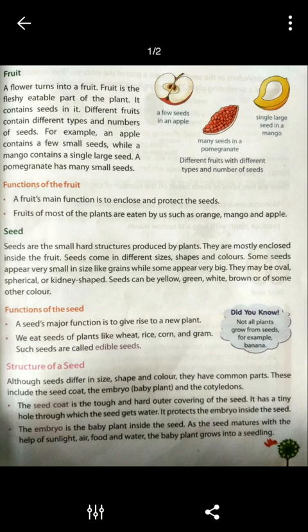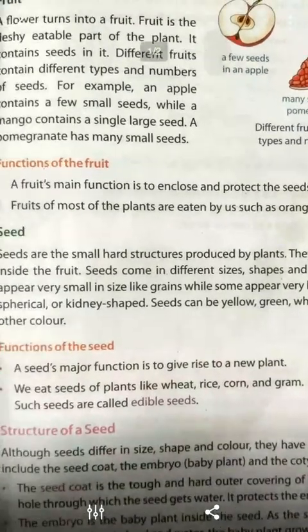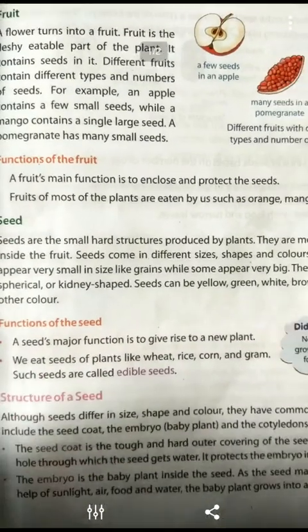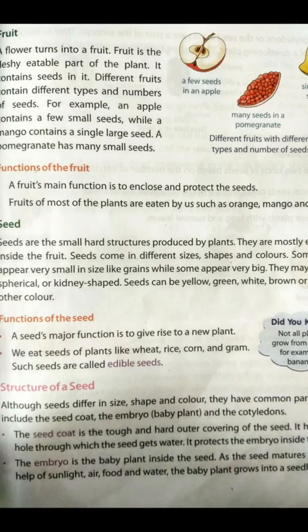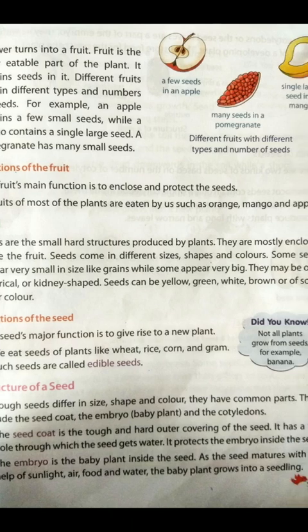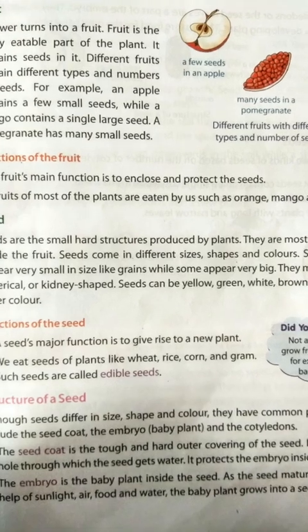A flower turns into a fruit. Fruit is the fleshy eatable part of the plant. It contains seeds in it.